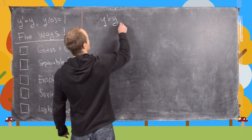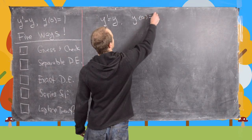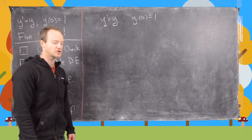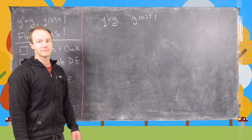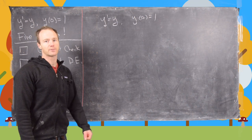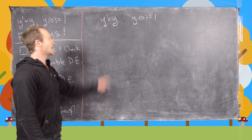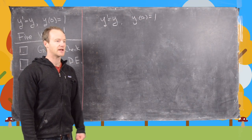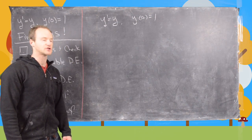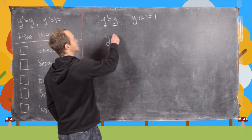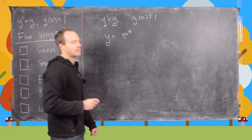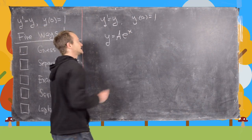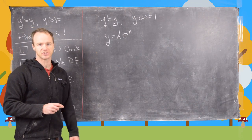So let's look at this differential equation: y prime equals y, y of 0 equals 1. What I mean by guess and check is just think through the catalog of functions that you know and think about what functions have the property that when you take their derivative you get back to themselves. If you think about it, you know that there's only one function, and that is y equals e to the x. But you can also multiply that by a constant and still have a solution to this differential equation.